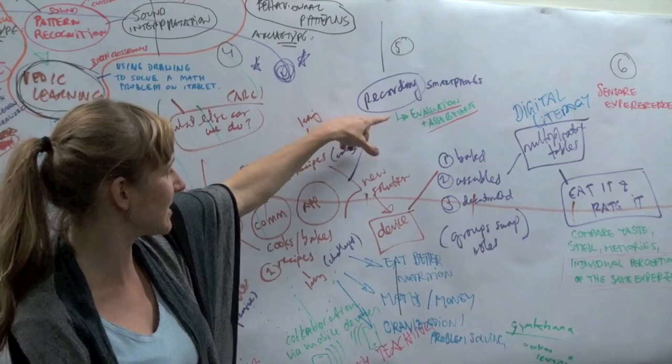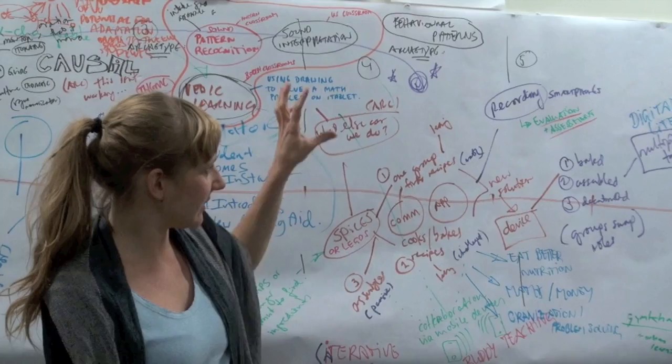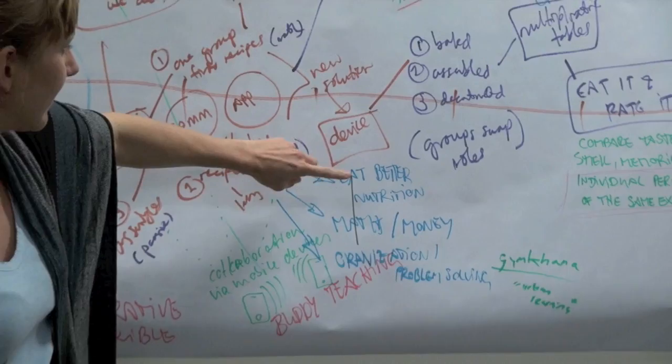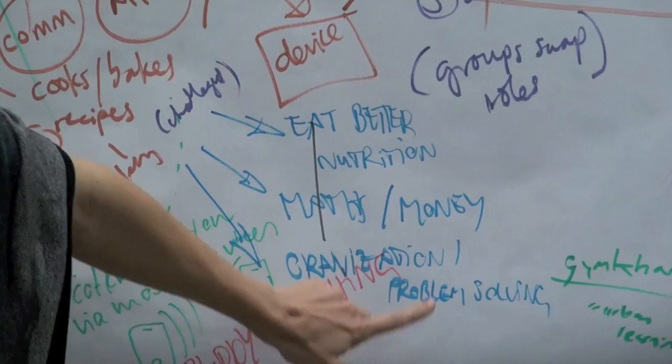Themes emerge around eating better. This teaches a lot of things—not just math, but also eating better, nutrition, dealing with money, organization, and problem solving. Stories emerge out of that because examples and experiences emerge. For example, eating better as an experience becomes a new story.